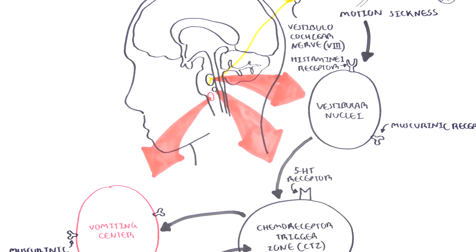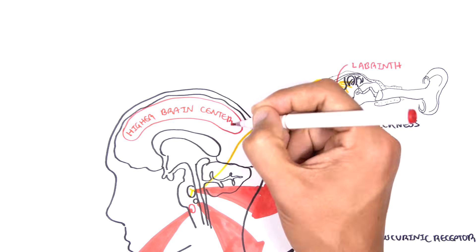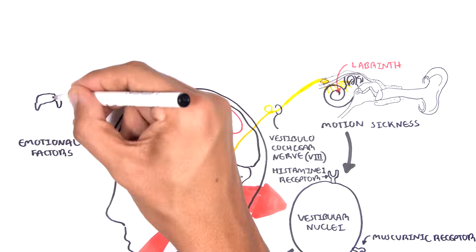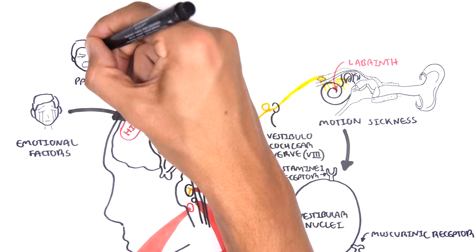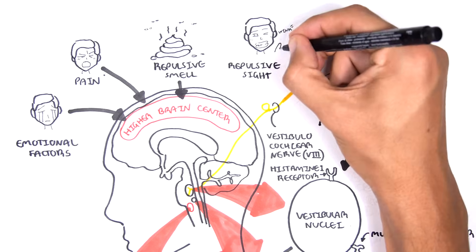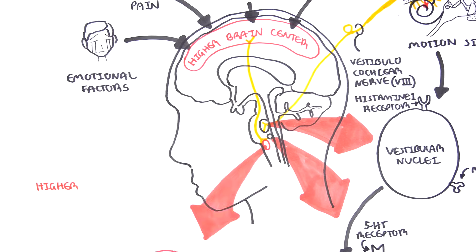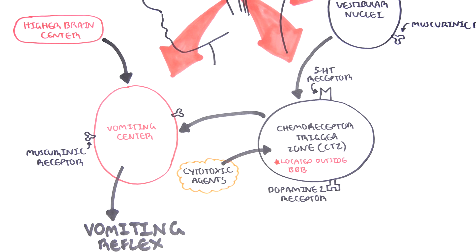Another cause of vomiting comes from the cerebrum after it has processed sensory information. For example, when people are emotionally overwhelmed, in severe pain, smell something really bad, or see something repulsive, all of this gets sensed by the higher centers of the brain. From the higher brain centers, the signal travels down to the vomiting center to stimulate the vomiting reflex through muscarinic receptors. This explains why some people get nauseous when they see blood or smell a horrible food.